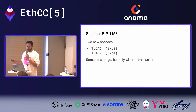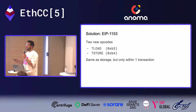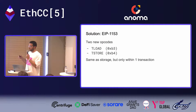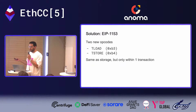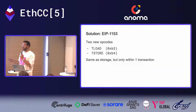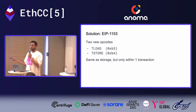That's where EIP-1153 comes in. It introduces two new opcodes: TLOAD and TSTORE. They behave exactly the same as SLOAD and SSTORE except they only persist within a single transaction. Because of that, they never have to read from disk or write to disk — the most expensive operations for a node — so they can be priced much cheaper. They do need to be a bit more expensive than memory because they still handle reverts like SSTORE and SLOAD do.